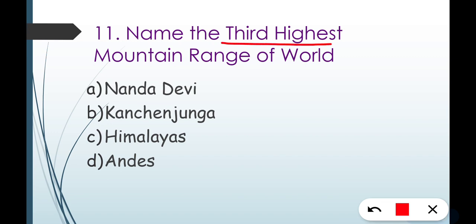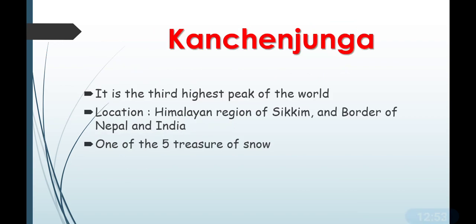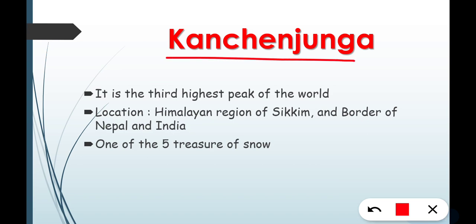Next: name the third highest mountain peak of the world. First is Himalayas range, second was K2. Options are Nanda Devi, Kangchenjunga, Himalayas, or Indus. The correct answer is Option B — Kangchenjunga. Kangchenjunga is the third highest peak of the world. Its location is in the Sikkim region, at the border of Nepal and India.